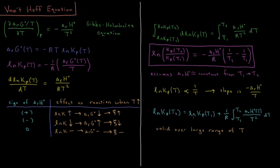If we know the equilibrium constant at one temperature, we can get it at another temperature by saying that ln Kp(T2) equals ln Kp(T1) plus (1/R) times the integral from T1 to T2 of ΔH°/T² dT. If the enthalpy change is not constant over that range, we can leave it inside the integral and express it as a function of temperature before evaluating.